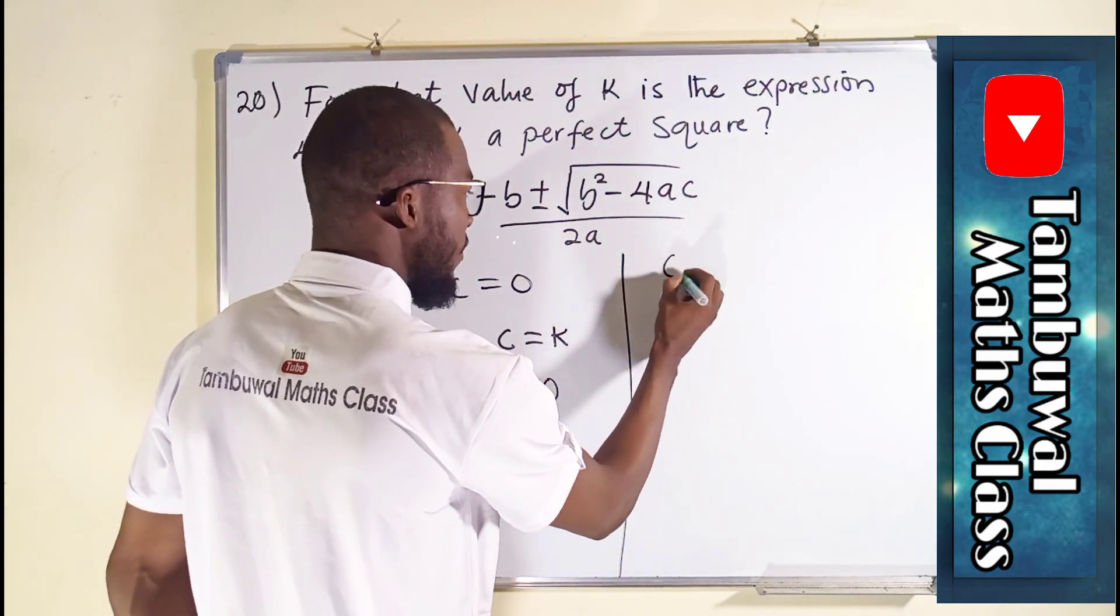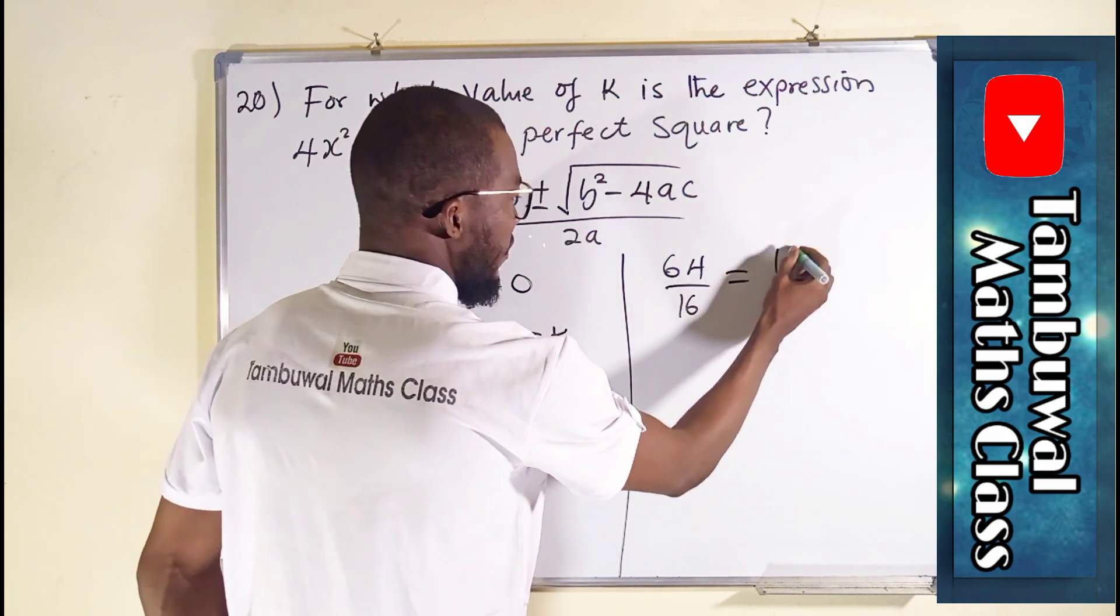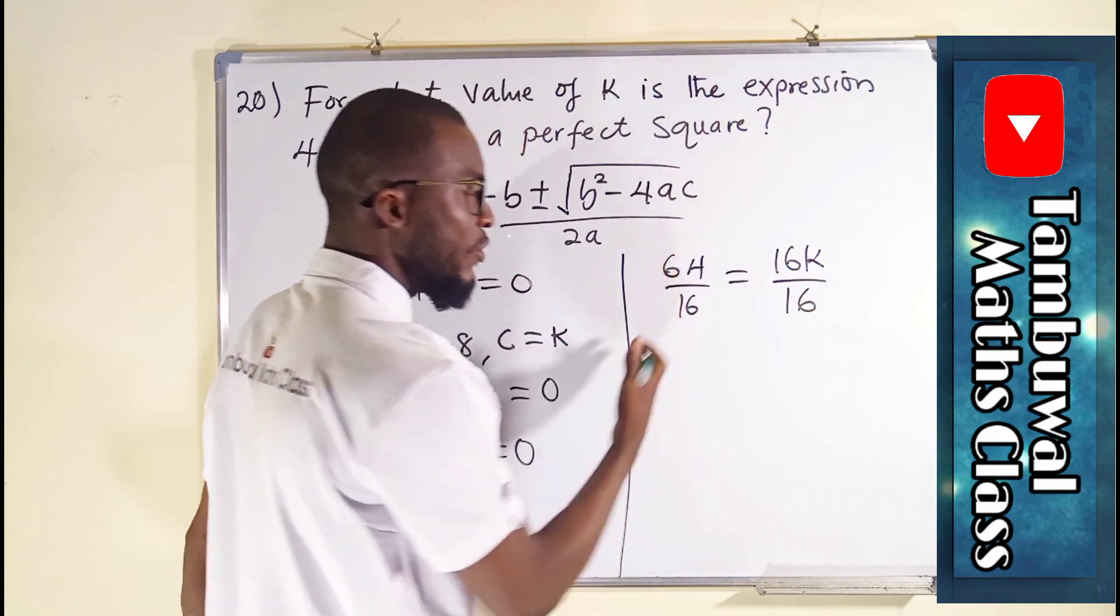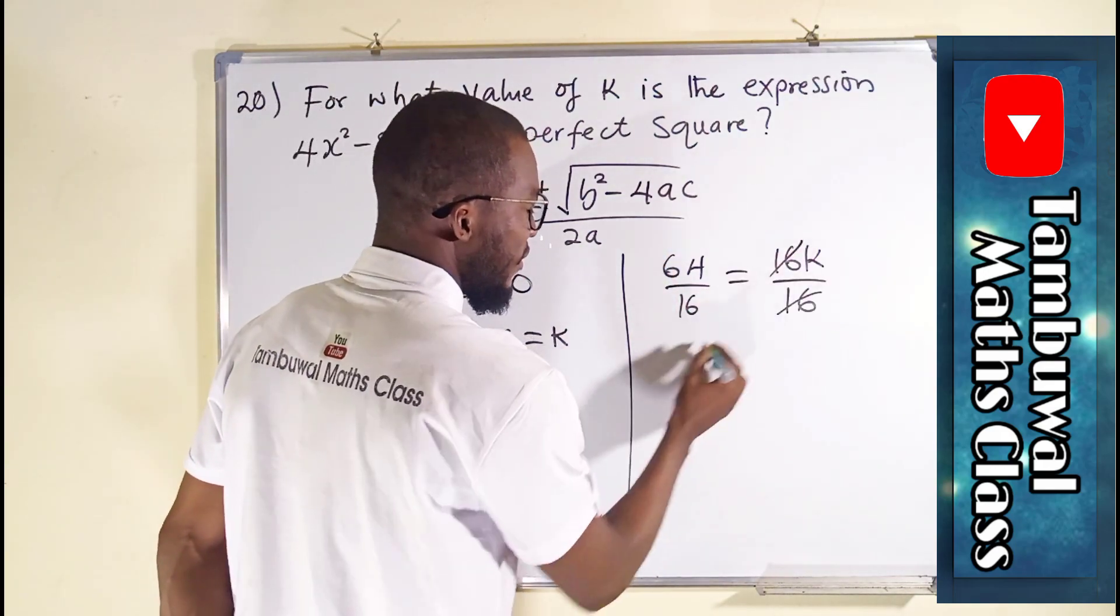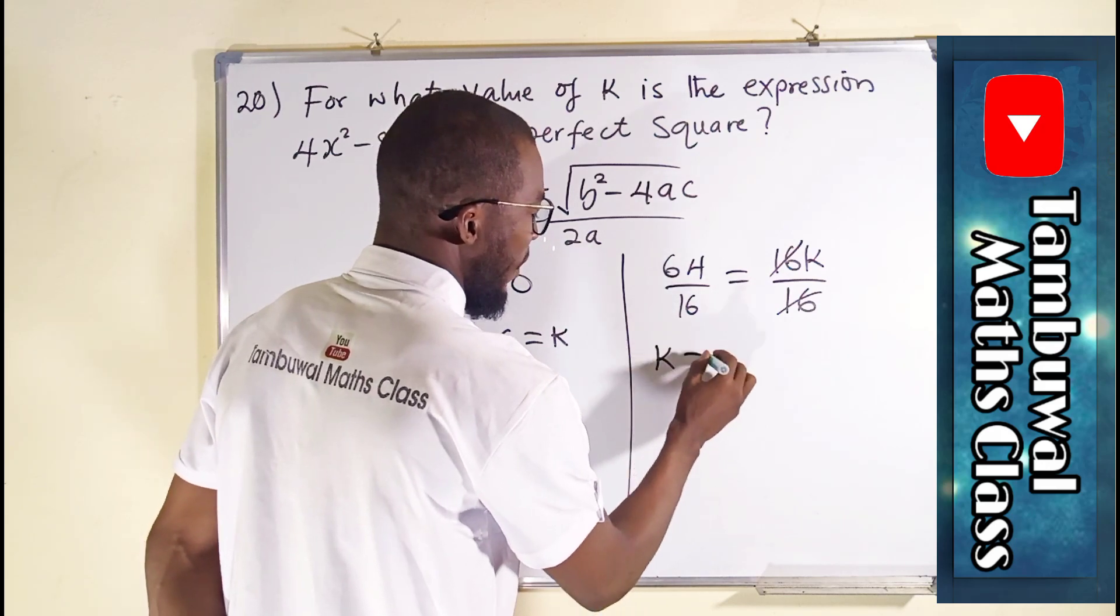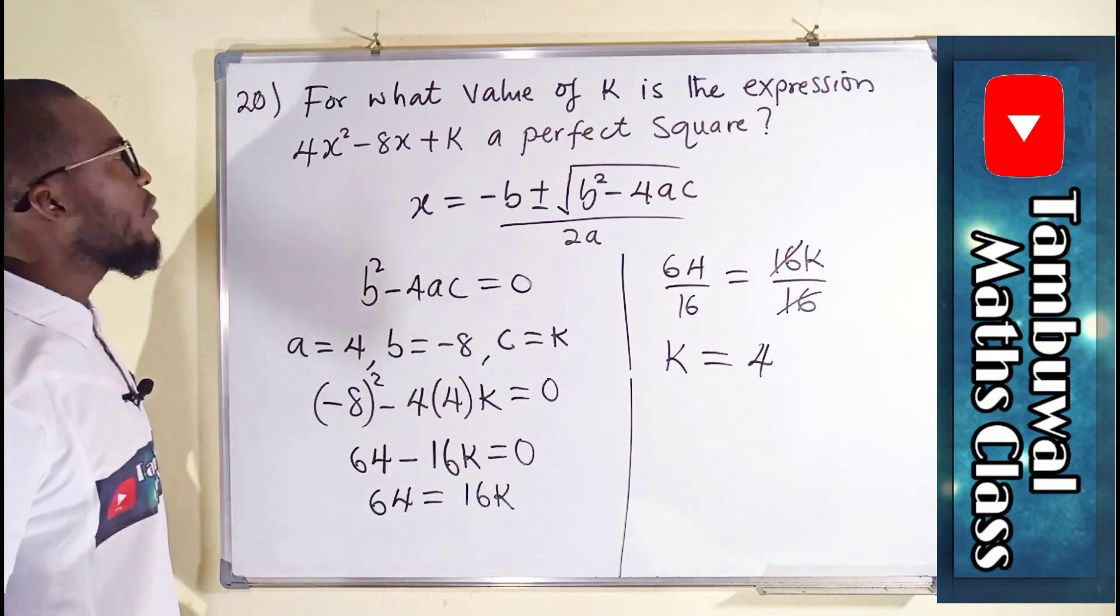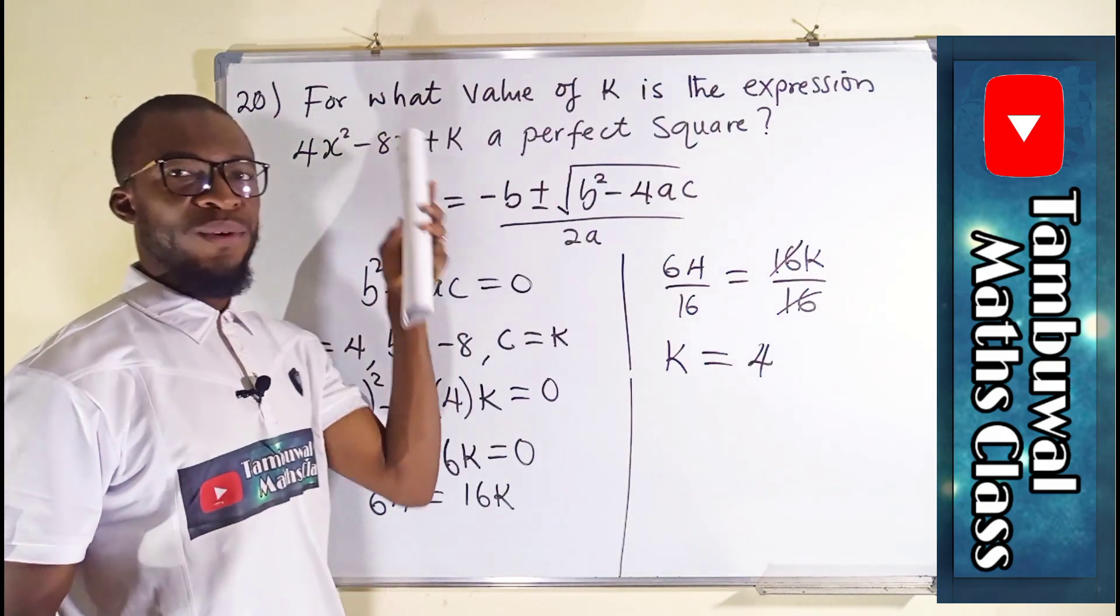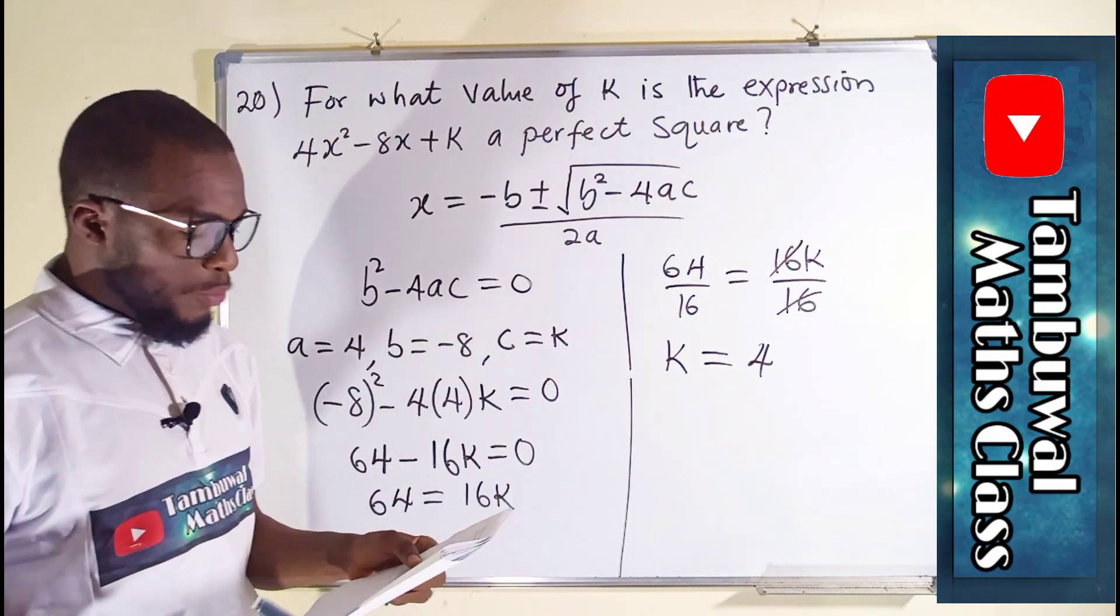So we say 64 over 16 equal to 16k over 16. Whatever you do to the left-hand side, you have to do it to the right-hand side. This will cancel this, leaving only k, which is equal to 4. This means that the value of this k in this quadratic expression is equal to 4, which we have here as the option E.